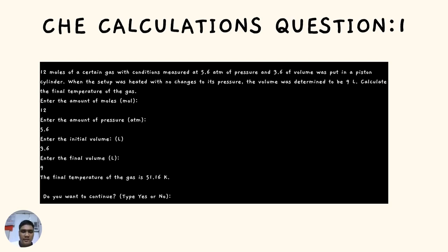Question 1: 12 moles of a gas measured at 5.6 atm and 3.6 liters volume was placed in a piston cylinder. When heated with no change to its pressure, the volume was determined to be 9 liters. Calculate the final temperature. Enter moles as 12, pressure as 5.6 atm, initial volume as 3.6, and final volume as 9. The final temperature of the gas is 51.62 Kelvin.